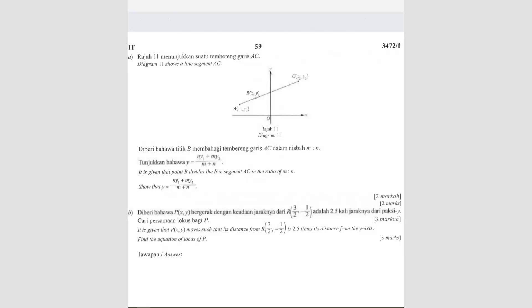Question number 15. Diagram 11 shows a line segment. It is given that point B divides the line segment AC in the ratio of M to N. So that means this ratio here is M, here is N. Show that Y is equal to... this is actually the derivation. They want you to derive that.